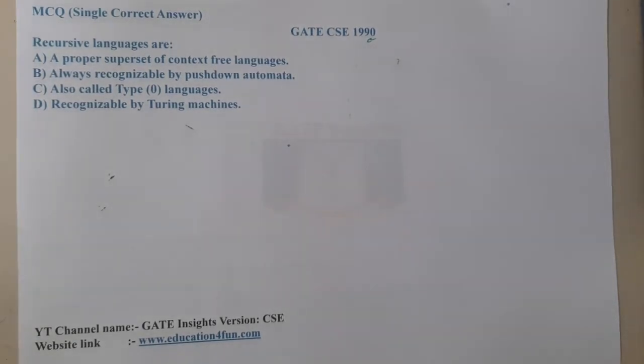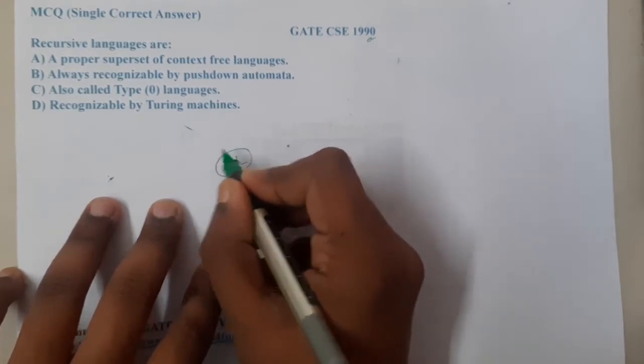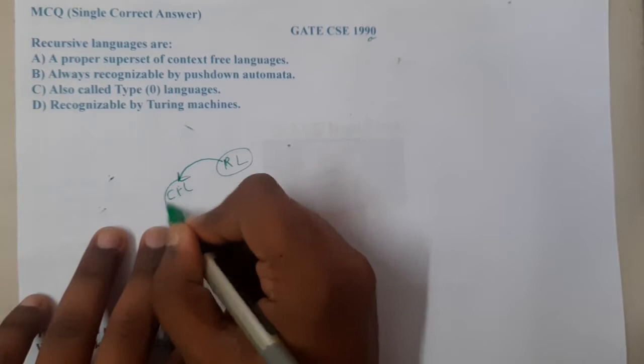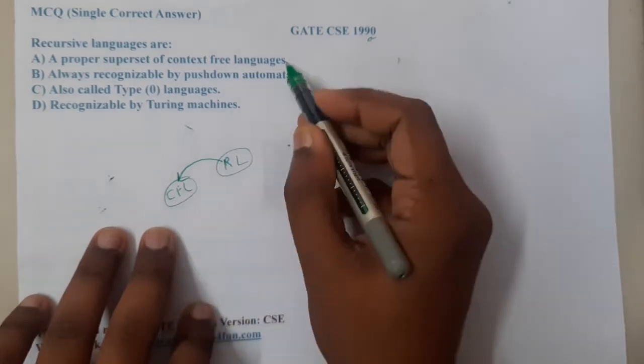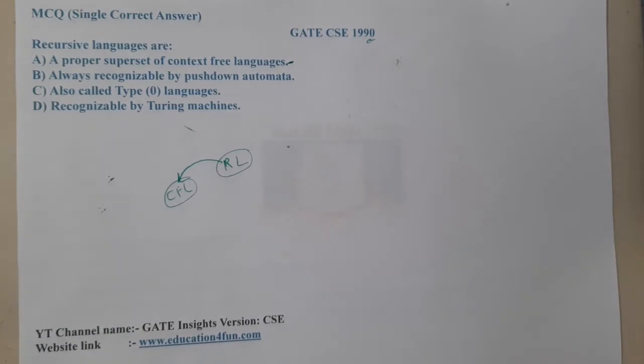Option A says that recursive languages are a proper subset of context free languages. Yes, that could be true, right? If a particular language is a recursive language, it might be a context free language also. That could be true.